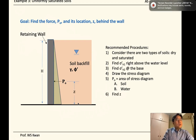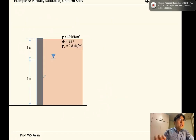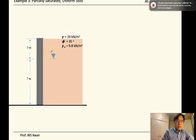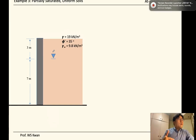We account for both soils and water, then find the resultant force and locate where it acts. Here's the example: we have a uniform soil site with a unit weight of 19 kilonewtons per cubic meter, a friction angle of 35 degrees, and the water table located three meters from the top grade and seven meters from the base of the retaining structure. We want to find the resulting force from the water and soil mass behind the wall, as well as the location of that force.